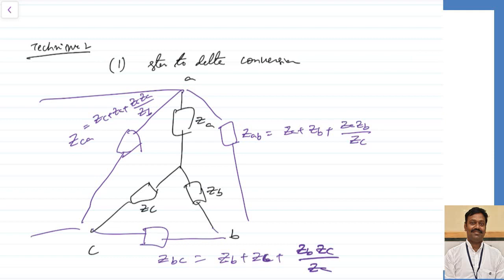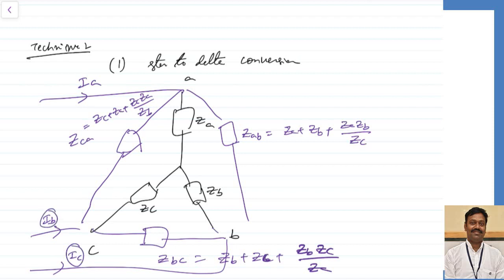Remember: whenever you do star-to-delta or delta-to-star conversion, the line currents and line voltages will not change, and the impedance across any two lines will not change. Using this delta connection, I can calculate IA, IB and IC. Since in star connection the line current equals the phase current, once these currents are obtained, VAO = IA × ZA. Generally, I prefer either the VON method or the star-to-delta conversion.